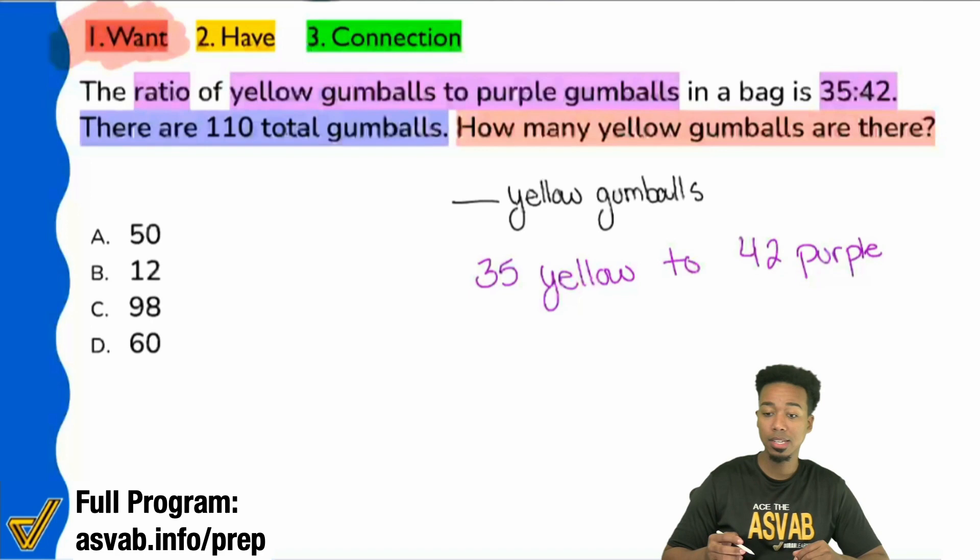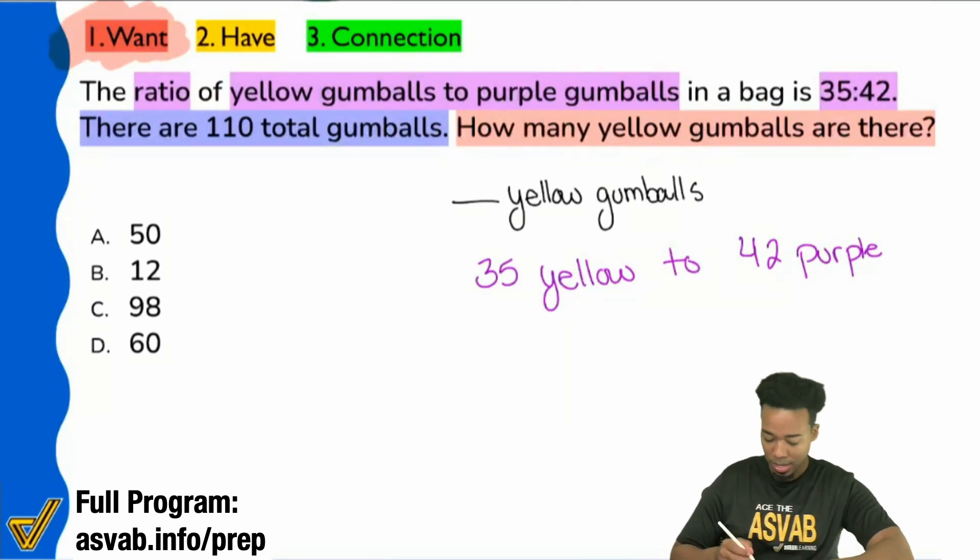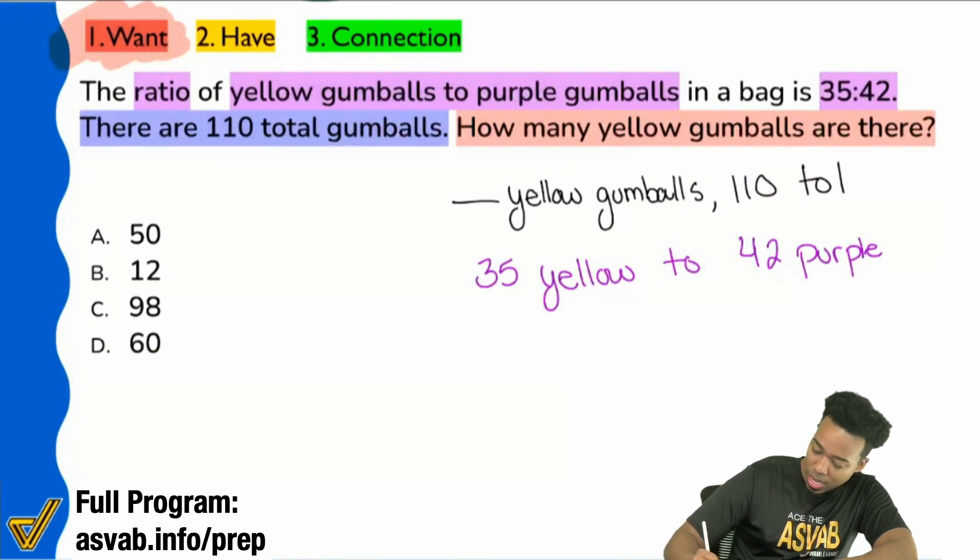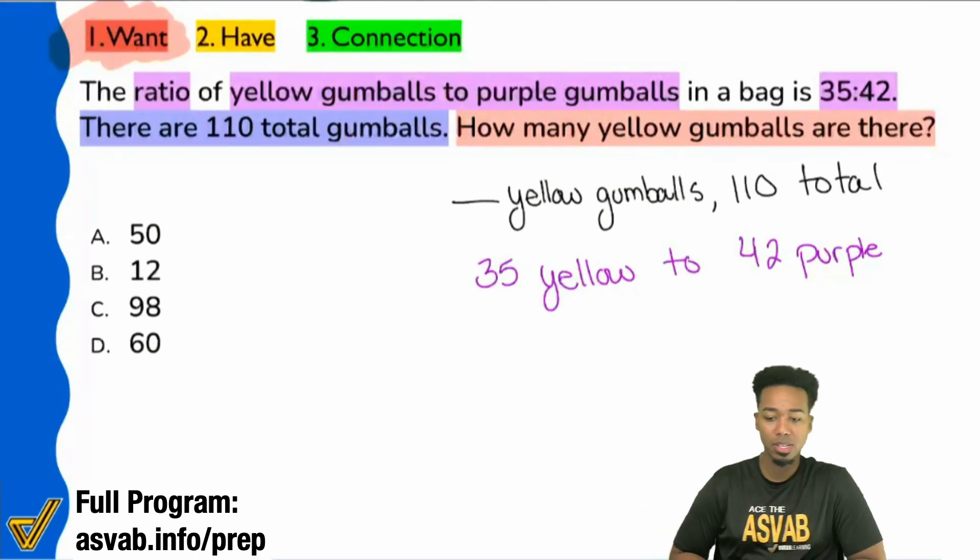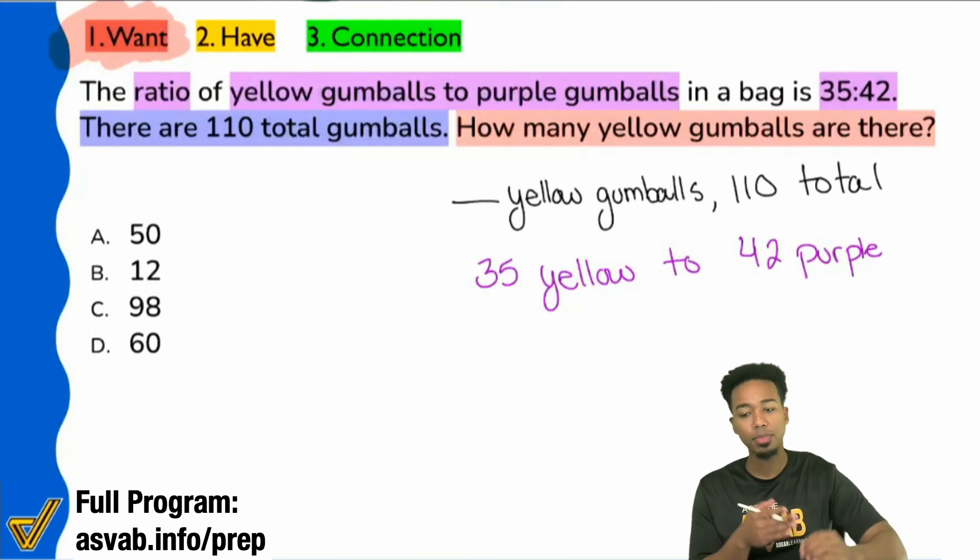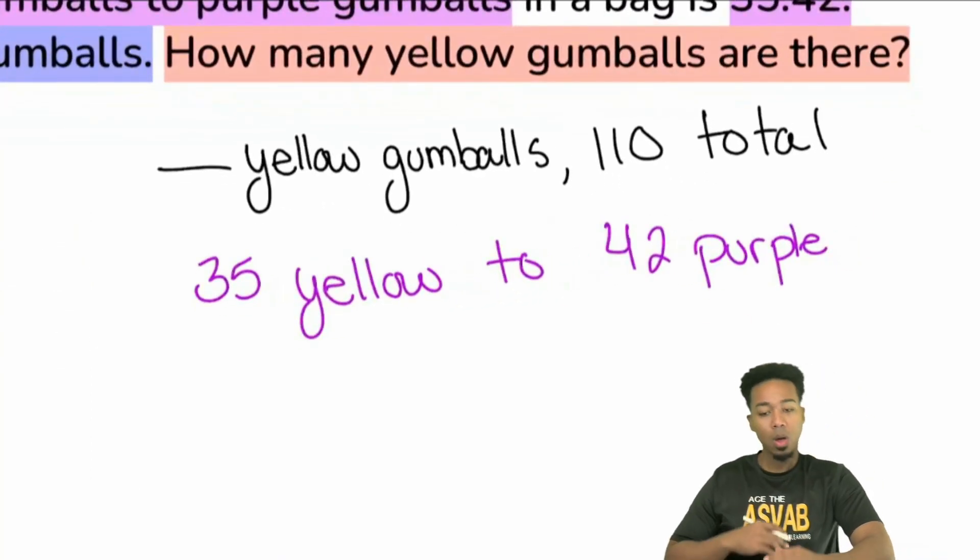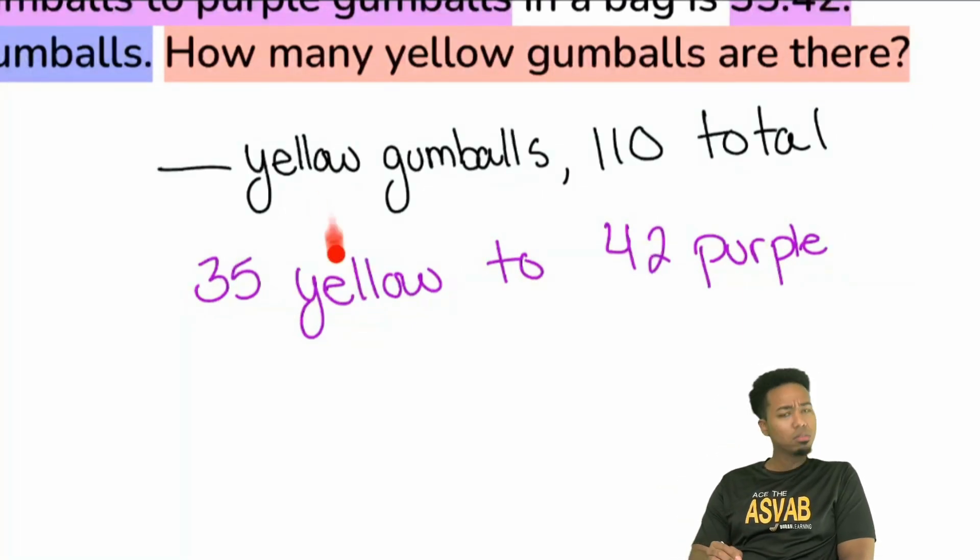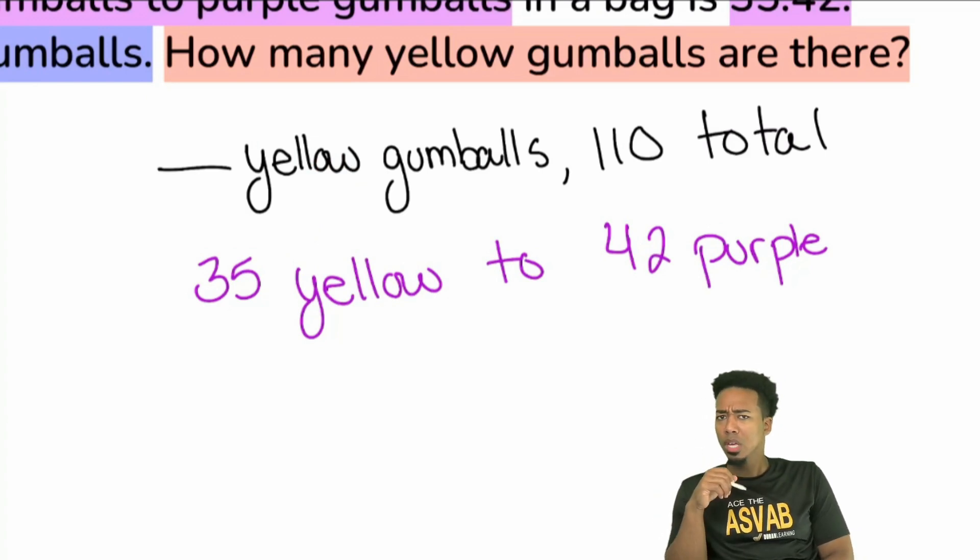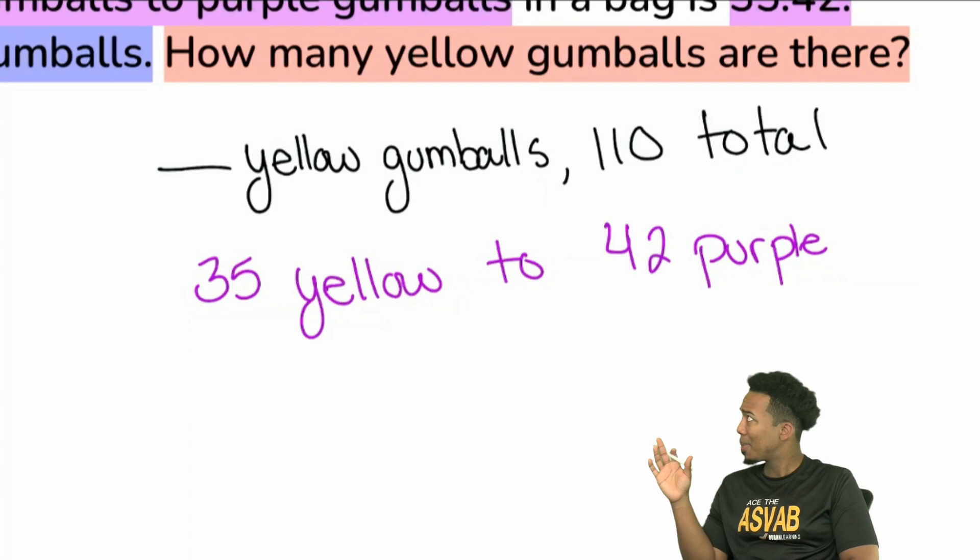And this is right here. This part that we're entering is where 50% of people fall off when it comes to proportions because they just don't know the one main idea. Compare the same things in the same way. So everybody think about it like this. In this first sentence, they gave us a ratio. The comparison. Yellow to purple. This is the comparison. Then they tell us we have 110 actual total gumballs and how many actual yellow do we have? Is it safe to say that I'm allowed to compare the 110 total with the yellow that I'm seeking because those are the actual number of gumballs?